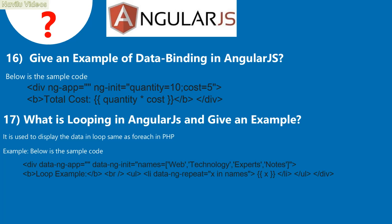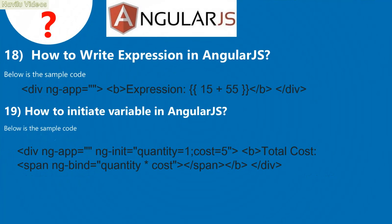Give an example of data binding in AngularJS — below is the sample code. What is looping in AngularJS? It is used to display data in a loop, similar to foreach in PHP — below is the sample code. How to write an expression in AngularJS — below is the sample code. How to initialize a variable in AngularJS — below is the sample code.